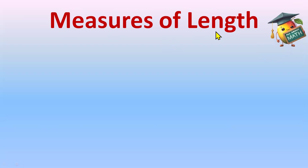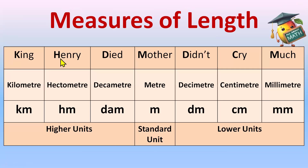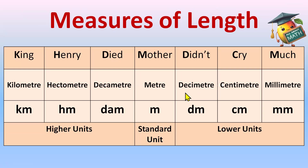To remember the sequence for measures of length, use this line: 'King Henry Died Mother Didn't Cry Much.' K for kilometer, H for hectometer, D for decameter, M for meter, D for decimeter, C for centimeter, and M for millimeter. The abbreviations are: km, hm, dam, m, dm, cm, and mm. Remember: deca is 'dam' and decimeter is 'dm' — deca is higher than decimeter.